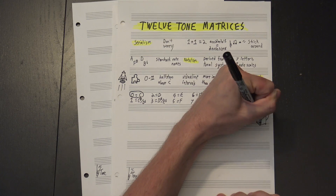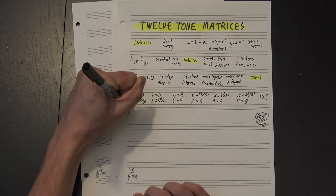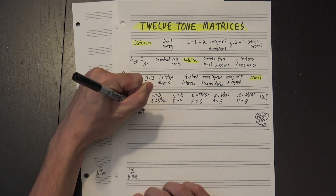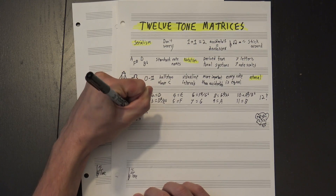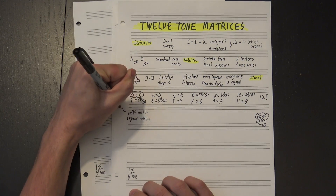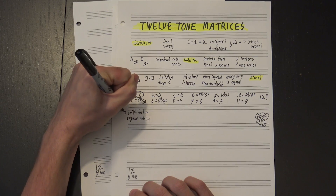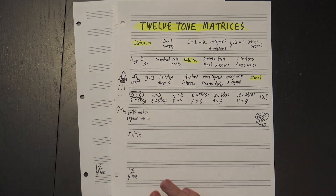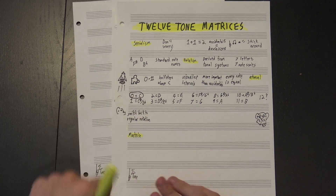This is just for composition, though. When you're transcribing a piece to be played, you should switch back to regular notation — that's way easier to read. With that in mind, let's talk about the matrix.